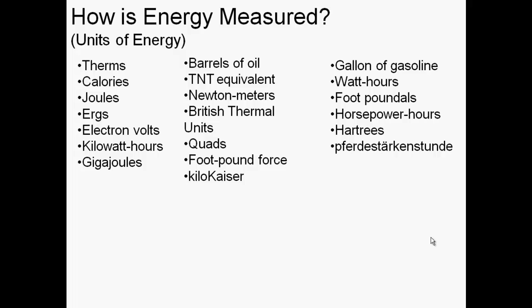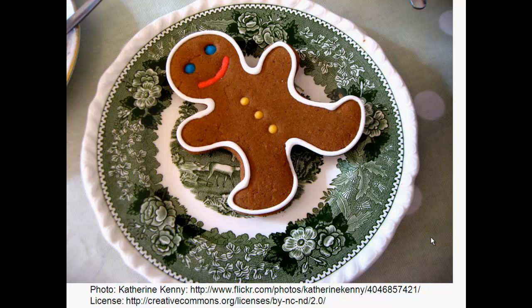We often want to know how much energy there is in something, or how much energy gets converted from one form to another. There are all sorts of units for measuring energy — about 20 different units, some of which were unfamiliar even when researching this. The most useful type of unit is one that relates to some real-world phenomenon. One that we can all relate to is the calorie, a unit often used for measuring how much energy is in food. In a nice little gingerbread cookie, there's probably about 100 calories of energy.